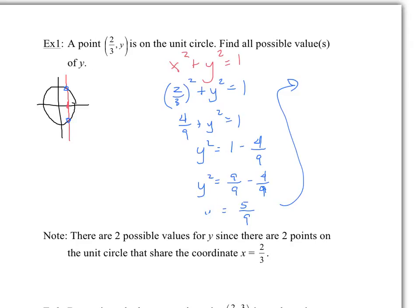Since you have y squared, you need to take the square root to get your solution. So square rooting both sides gives y equals plus or minus the square root of five-ninths. Anytime you have an equation where you're taking a square root, you always have plus or minus — for example, if x squared equals 4, both plus 2 and minus 2 satisfy it, so the solution is plus or minus 2.